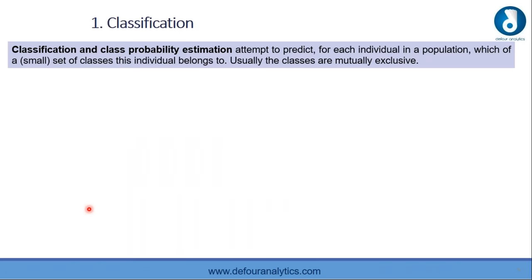Technique number one is classification and class probability estimation. Classification is an attempt to predict, for each individual in a population, which of a small set of classes that individual belongs to. For example: among all the customers of a telecom company, which customers are likely to respond to a new offer?